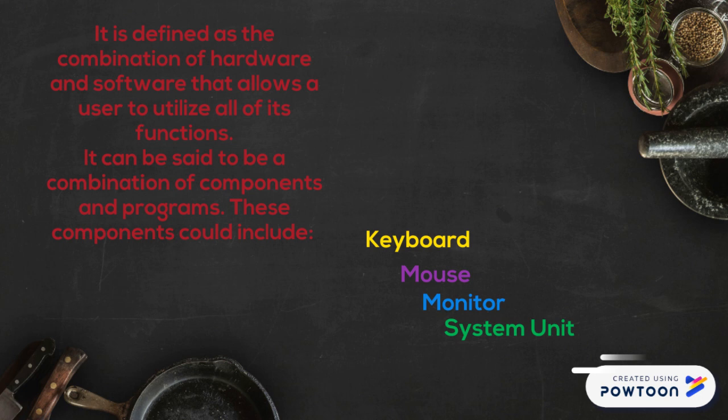Generally, when we think of a computer system, we think of a monitor, a keyboard, a mouse, and a system unit — those are the components we typically associate with a computer system, and that is correct. But a computer system can be any device that uses a computer inside of it and has both a physical and a software component working together.